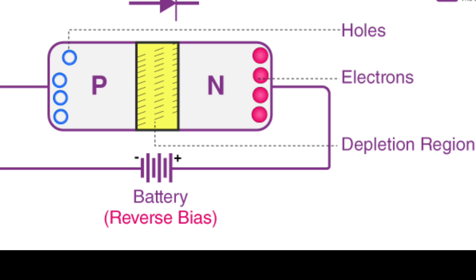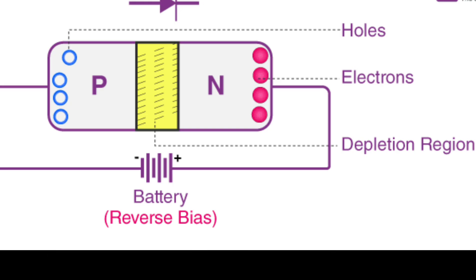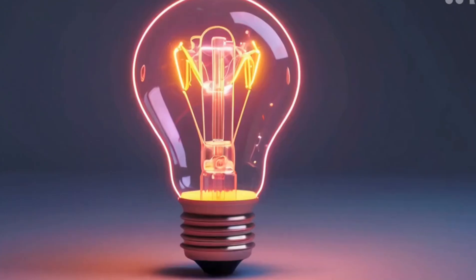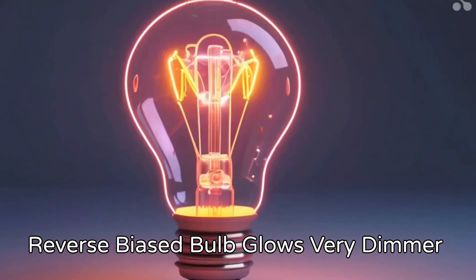Current flow in a reverse biased P-n junction is very small. This is because the depletion region at the junction is wider and the diode's resistance increases, making it harder for current to flow. The P-type side of the junction is connected to the negative terminal of a battery and the N-type side is connected to the positive terminal.